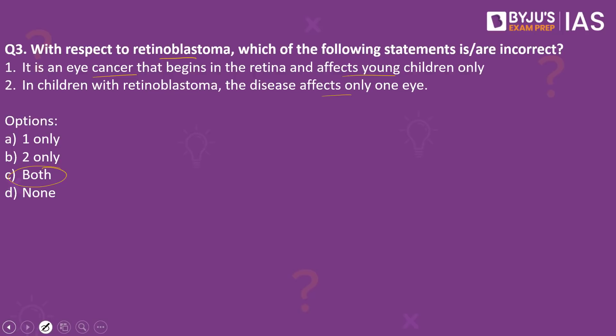The second statement is also incorrect. In most situations it does affect one eye, but there are also possible chances it may affect the second eye as well. So retinoblastoma is a cancer of the eye that occurs usually in small children. It can occur in one or both the eyes, and it may be hereditary — passed on from parents — or it can occur sporadically. This is a life-threatening disease that can also take away the eyesight of the child.